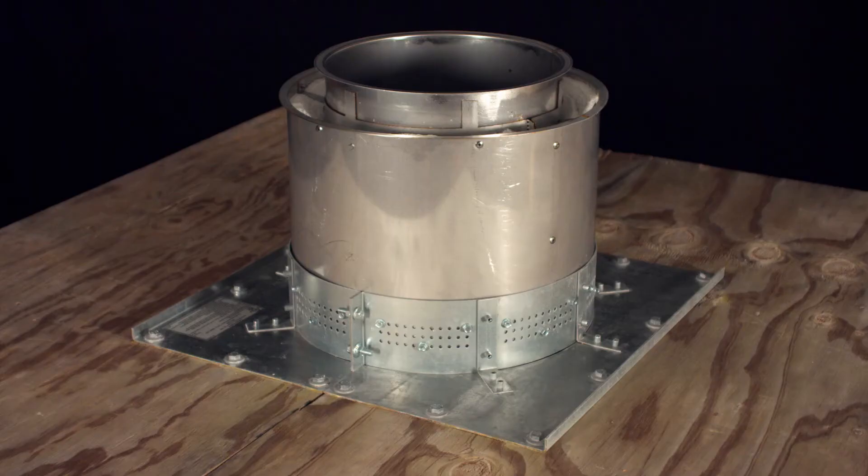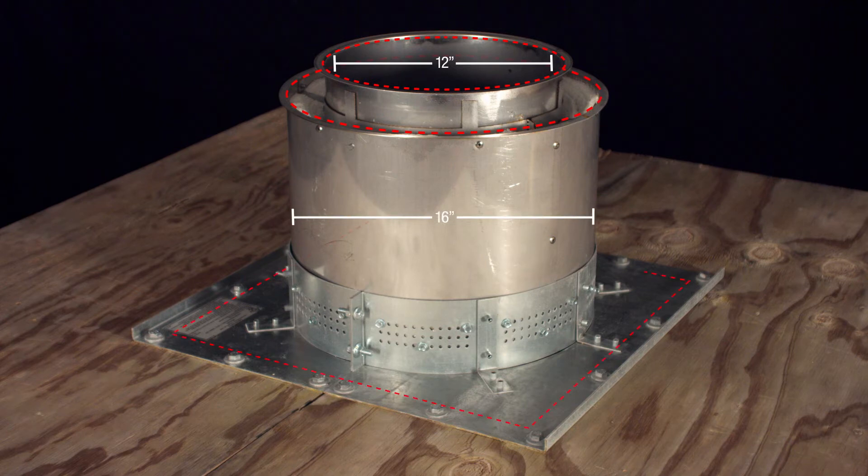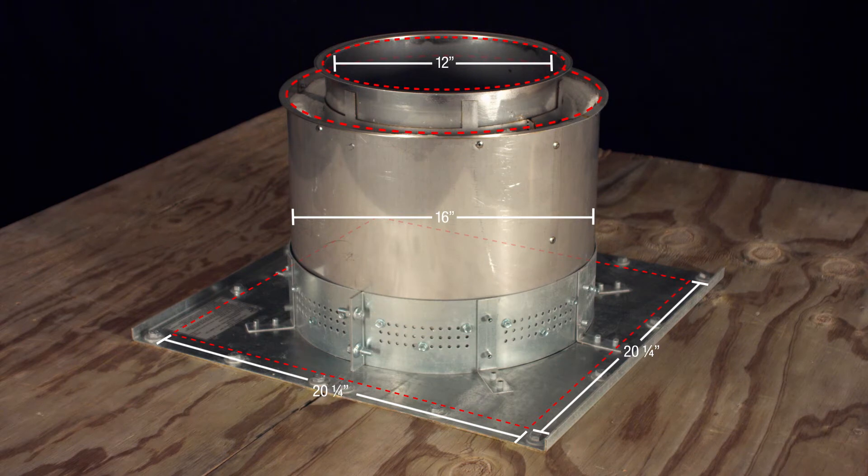For example, the duct shown here has an inner diameter of 12 inches and an outer diameter of 16 inches, so the opening in the floor is a 20 and a quarter inch square. The additional quarter inch ensures the opening meets the required minimums.